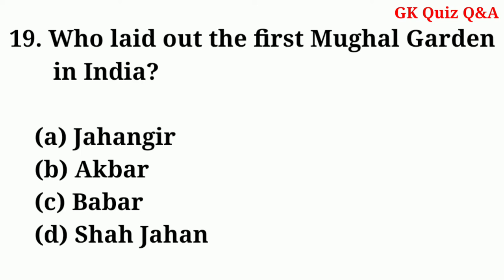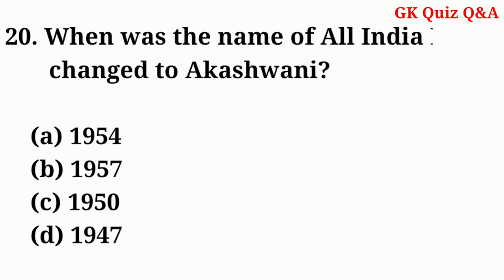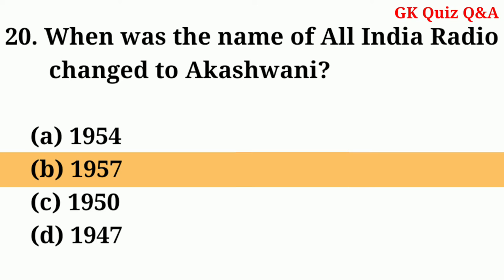Answer: C — Babur. When was the name of All India Radio changed to Akashvani? Answer: B — 1957.